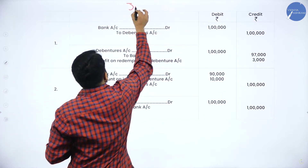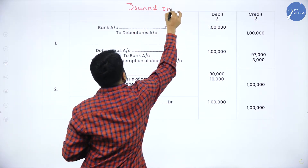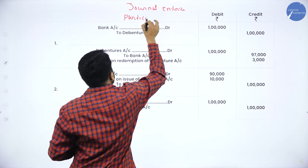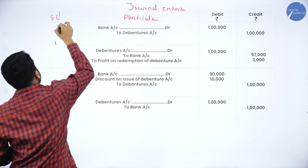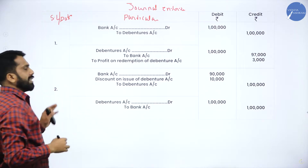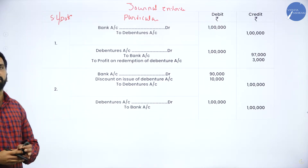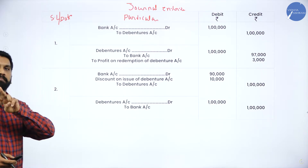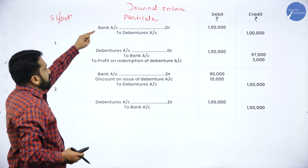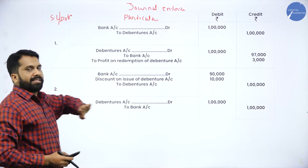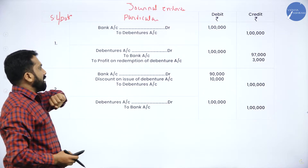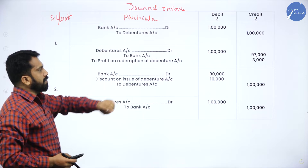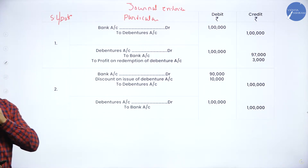You have to mention the journal entries. Here: serial number, particulars, date — these are the basic fundamentals you have to complete. Two marks each, plus two marks for presentation. Now, bank to debenture, debenture to bank — simple if it is par and par. But in this you have discount also: to profit on redemption of debenture. This will be your journal entry for the first one.